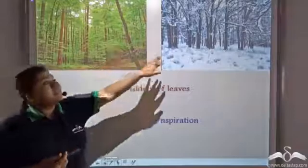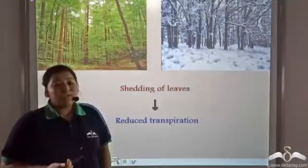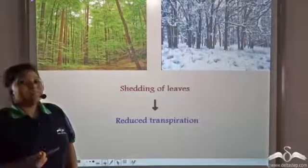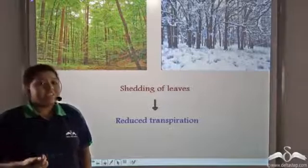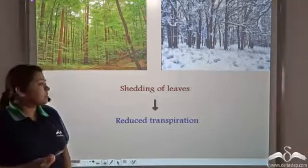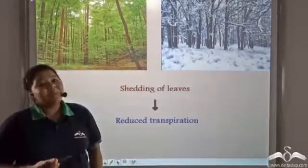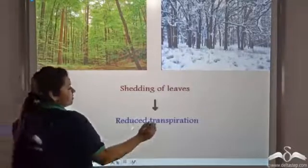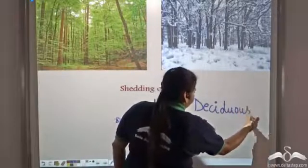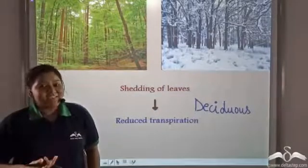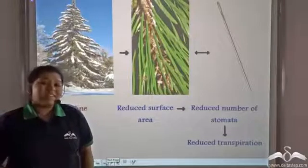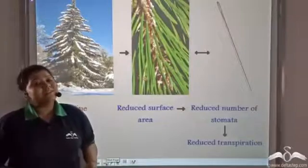Now what about plants that are present in extremely cold climates and do not get free water because all the water has converted into ice? Well, these plants shed their leaves. So the number of stomata will automatically decrease and there will be reduced transpiration. These plants that shed their leaves are known as deciduous trees. Deciduous trees shed their leaves twice a year, and this is their way of reducing the rate of transpiration.